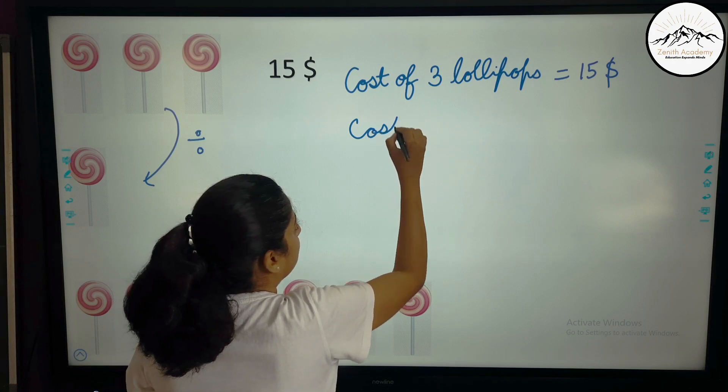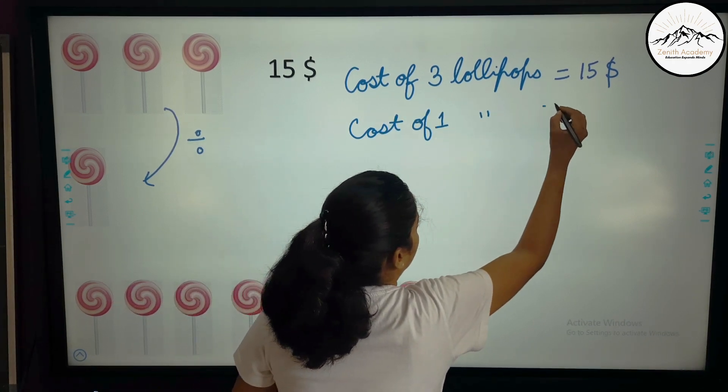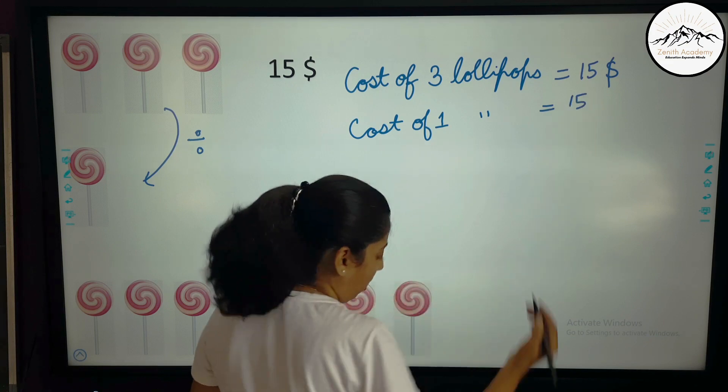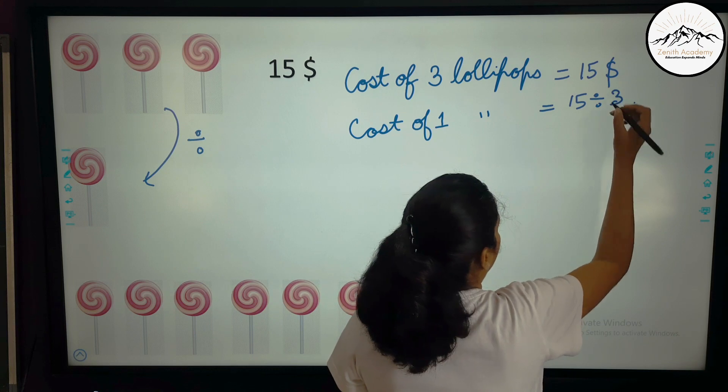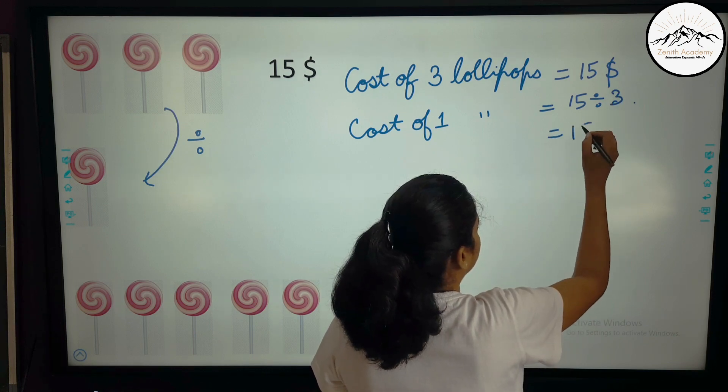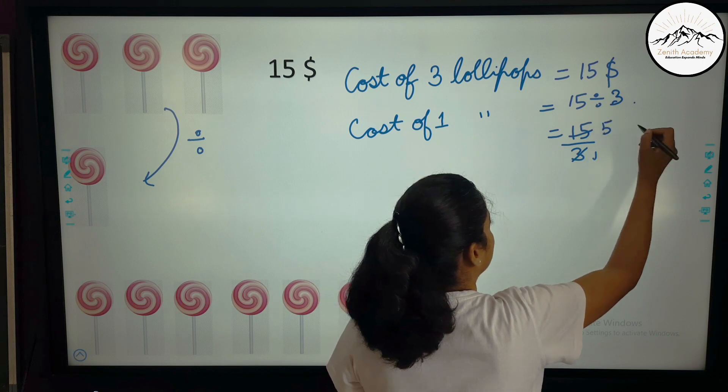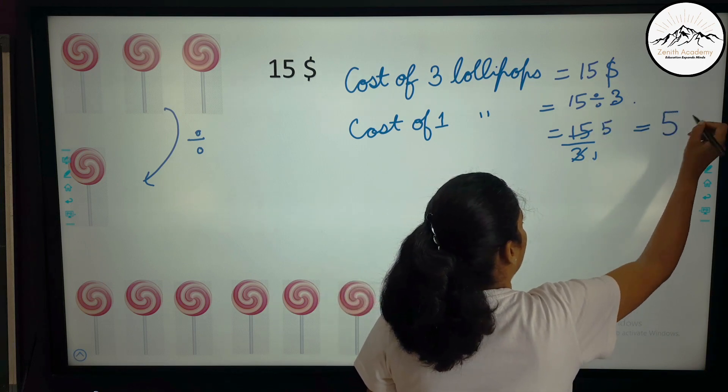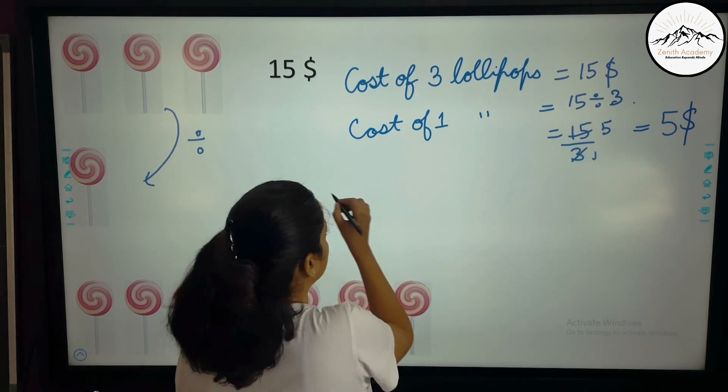So cost of 1 will be 15 divided by 3. Or I can write it like this. 15 divided by 3. So 3 is a 15. So I can write $5. 15 divided by 3 is 5.